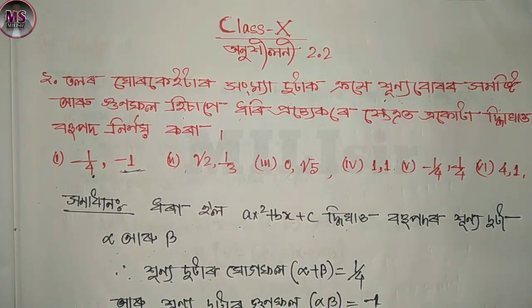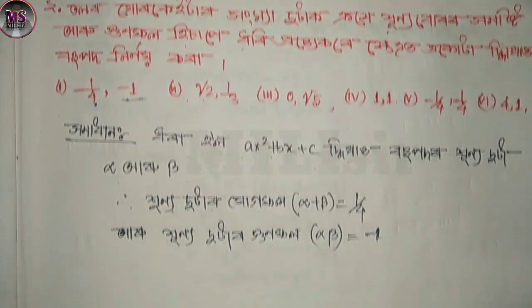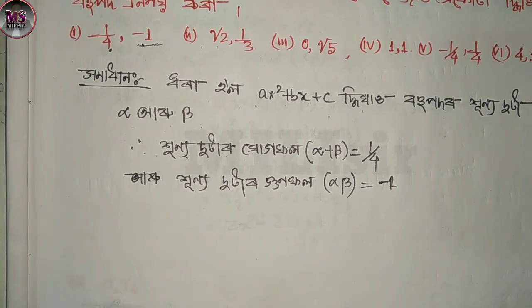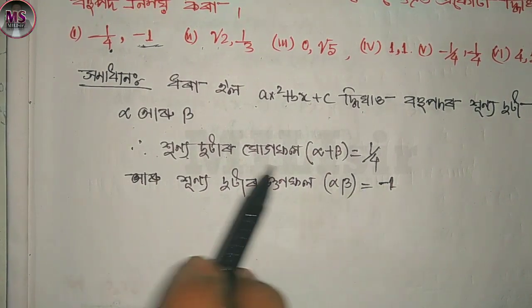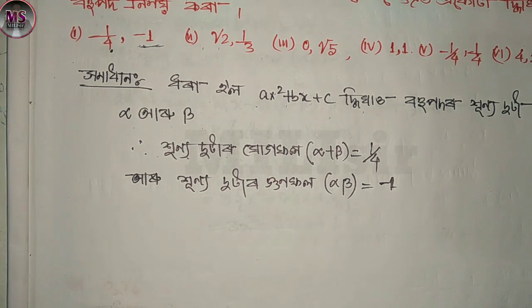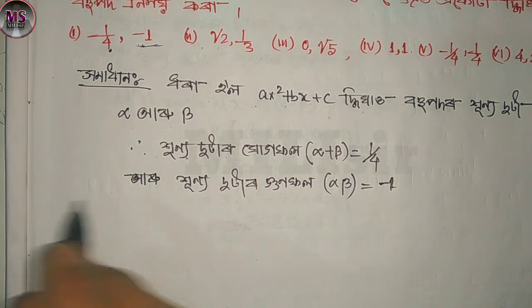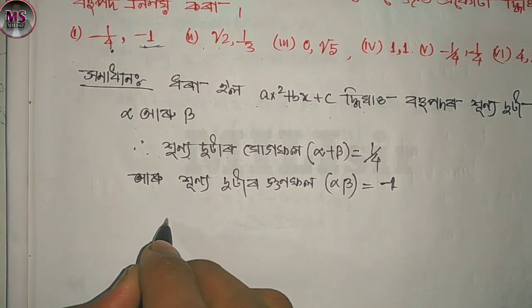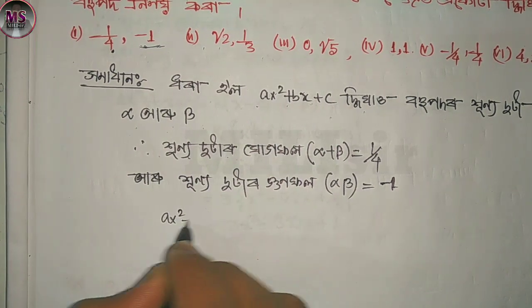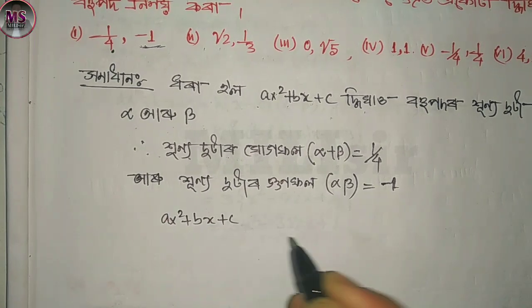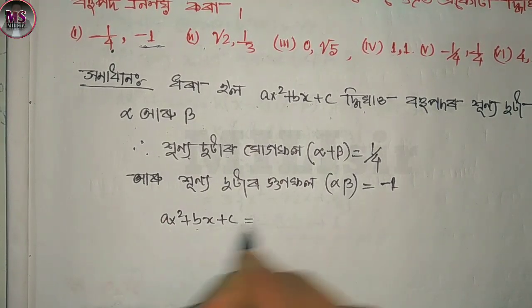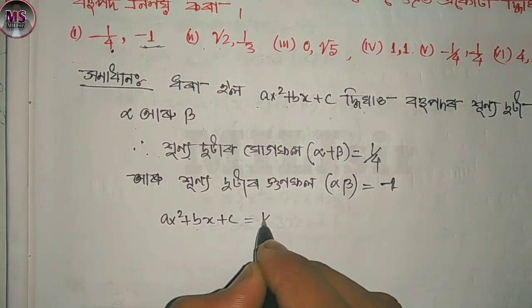So, we are going to do this again. This is d plus by 2, 9. I'll do that again. So I am going to write K.